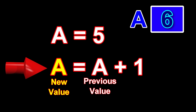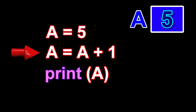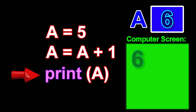Let us now consider a program consisting of the following three statements. The first statement sets the variable a to 5. The second statement sets the variable a to 6. The third statement, in many computer languages, takes the present value in the variable a and prints it on the computer monitor. Therefore, when we run this program, the value 6 will be displayed on the screen.